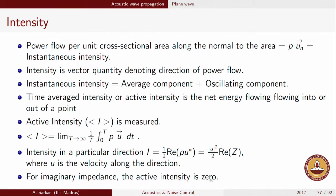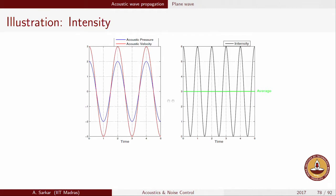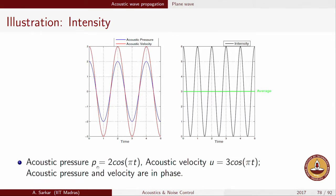For purely imaginary impedance, the formula tells us the active intensity is zero. We have already encountered impedances that are purely imaginary. Here I have plotted in blue the acoustic pressure and acoustic velocity. In this illustration, the pressure and velocity are completely in phase — I have used 2cos(πt) for pressure and 3cos(πt) for velocity, just to show arbitrary magnitudes.